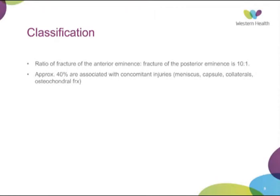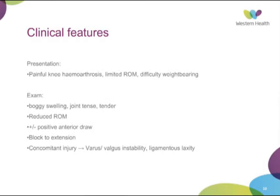Clinical features: typically the presentation is a child with a painful knee, haemarthrosis, limited range of motion, and difficulty weight bearing. They usually describe sudden onset of swelling and pain at the time of injury. On examination, there is boggy swelling with a tense joint, tender to palpation, with reduced range of motion. They may have a positive anterior drawer, though it's usually difficult to examine in the acute setting due to pain. Under EUA, most have a blocked full extension. You can also examine for other ligamentous injuries depending on the child's pain level.